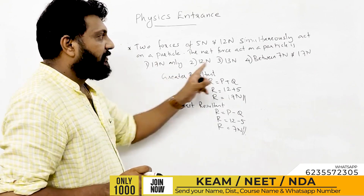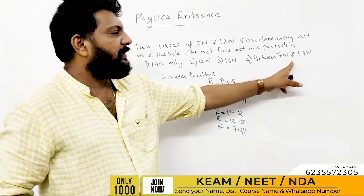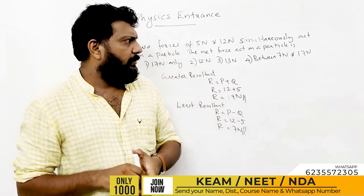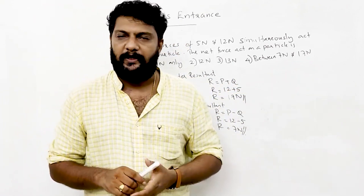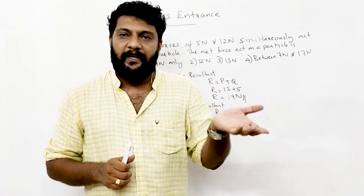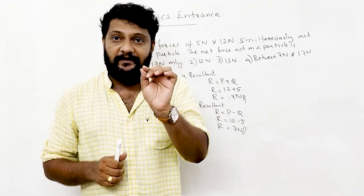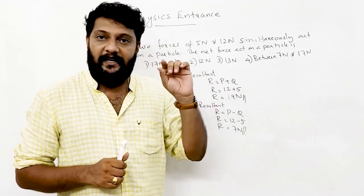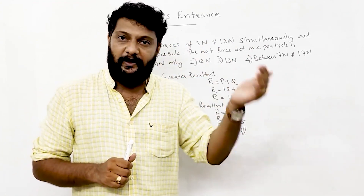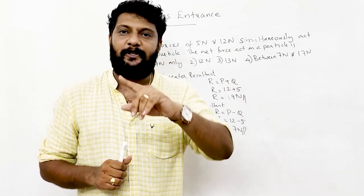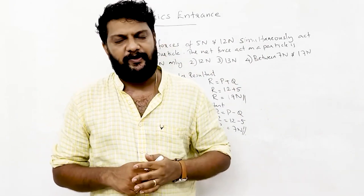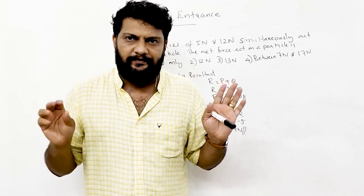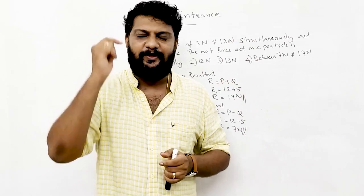This is the correct choice: between 7 Newton and 17 Newton. Greatest R = P + Q, least R = P - Q.